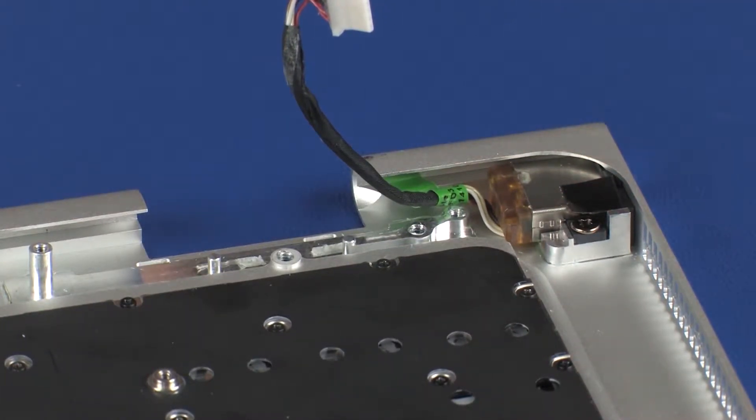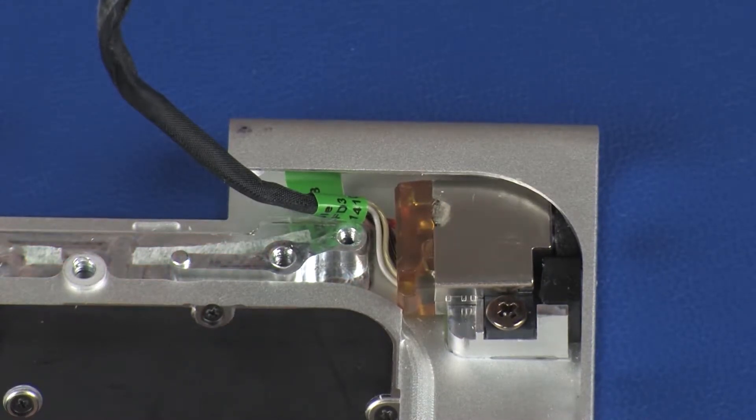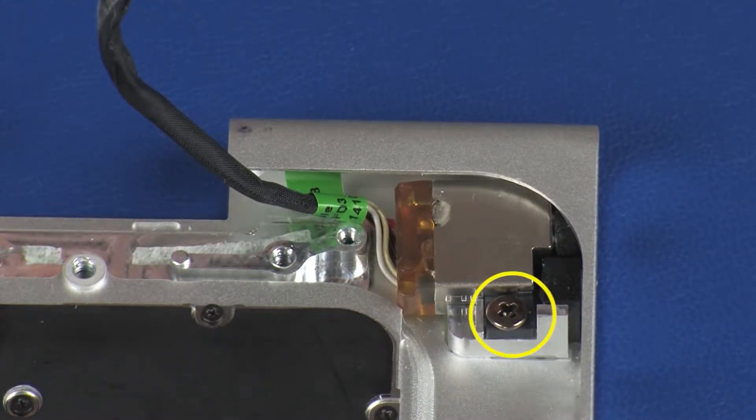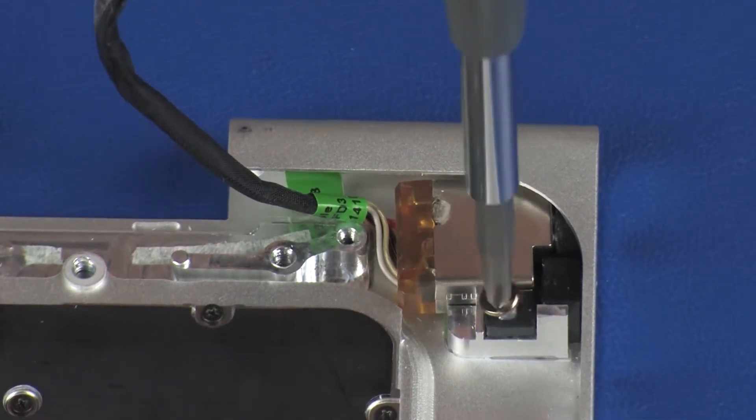Make careful note of the position of the mylar tape for later replacement. Remove the mylar tape that secures the power connector cable to the top cover. Remove the 3.5 mm P1 Phillips-head screw that secures the power connector to the top cover.